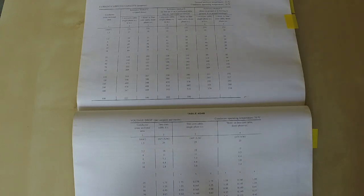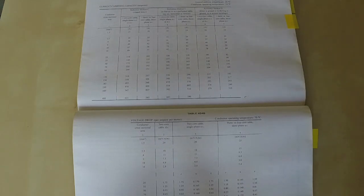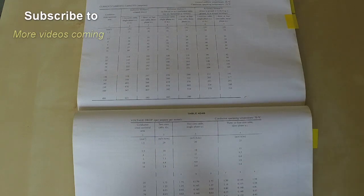If you find that after working out your volt drop it's above the maximum allowed—which is 6% or 8% of the voltage you're working with—then you simply do the same calculation again using a larger cable. The larger the cable, the less the volt drop.